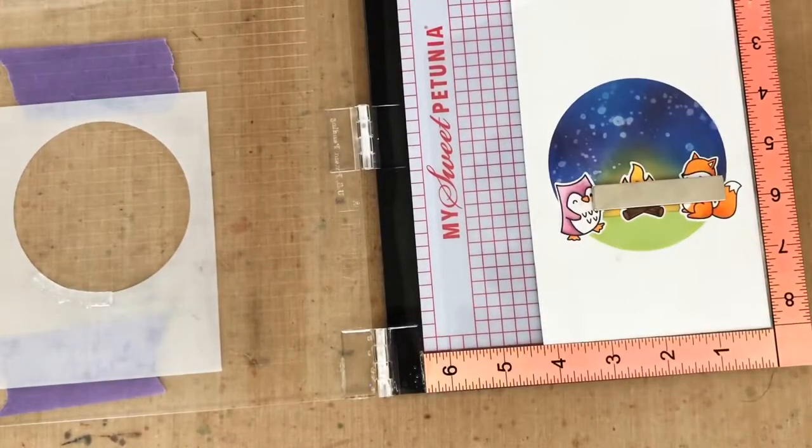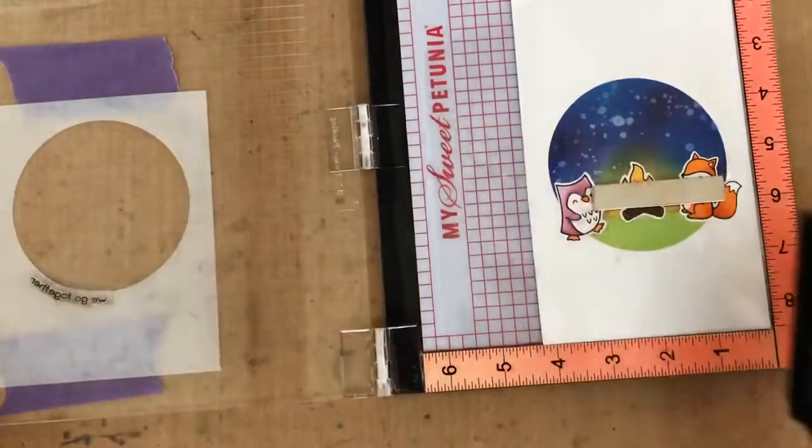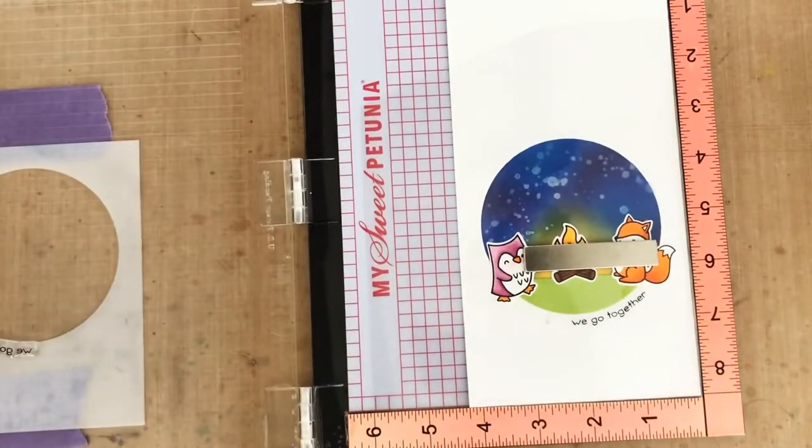Then I can put my critters back in there temporarily again, put a piece of scrap acetate on top, ink up my stamp and stamp it onto the acetate to make sure I've got that little sentiment stamp right where I want it.